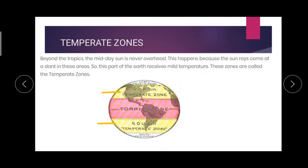Next, temperate zones. As I told you, there are two temperate zones — the North Temperate Zone and the South Temperate Zone. Here, the midday sun is never overhead, so this area has mild temperature — not all that hot. These zones are called temperate zones.